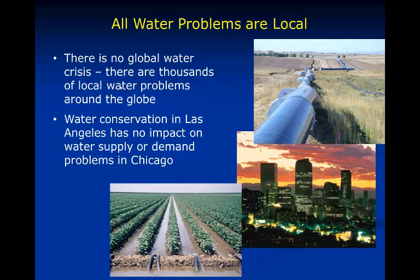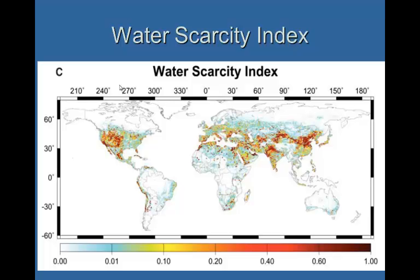We're talking about these challenges as global problems because they span the globe. But in reality, all water problems are local. There's really no global water crisis — there are thousands of local water problems around the globe. The Falkenmark Water Scarcity Index assumes that the absolute minimum of 100 liters per person per day is needed for hygiene and cooking, and a minimum of 1,000 cubic meters per capita per year is the level where water affects the economy and human well-being. The red areas on the chart indicate where the index identifies a problem.